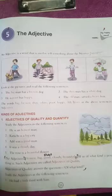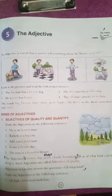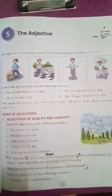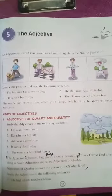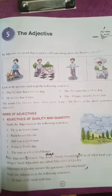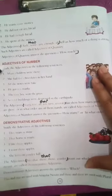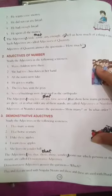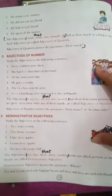In our previous lecture we studied three kinds of adjectives: first, adjective of quality and quantity; second, adjectives of number; and third, demonstrative adjectives. Adjective of quality tells us what kind of person or thing something is. Adjective of quantity tells us the quantity of a person or thing. Adjective of number tells us how many persons or things there are or in what order they stand. Demonstrative adjectives are used to point out which person or thing is meant.